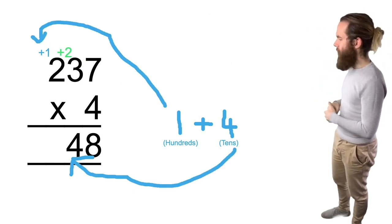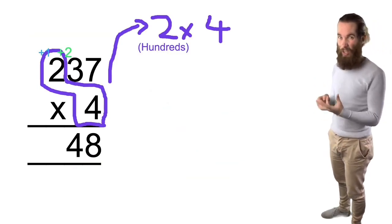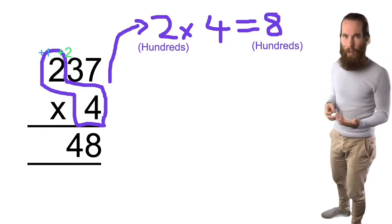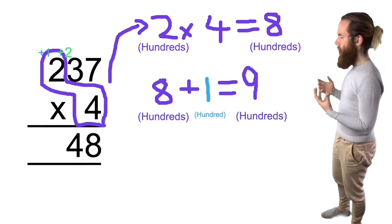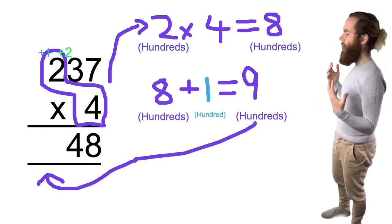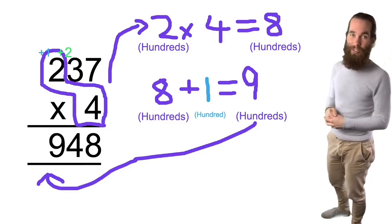Now I've got four times two, or it's actually four times two hundreds. So that is eight, 800, plus that 100 is nine hundreds. So we write down that nine and we get our solution. So four times two hundred and thirty-seven is nine hundred and forty-eight.